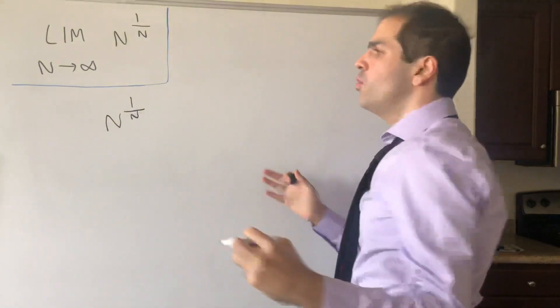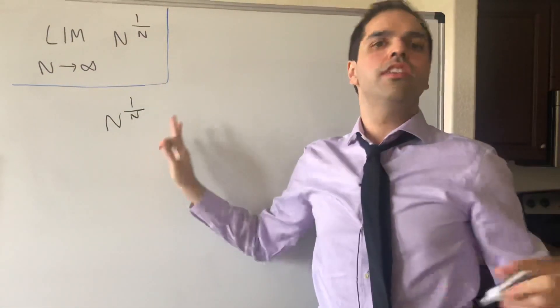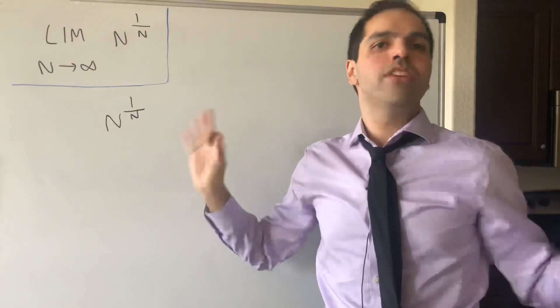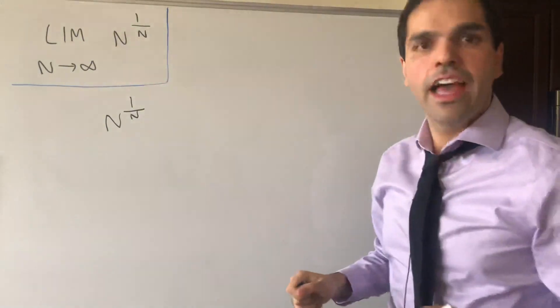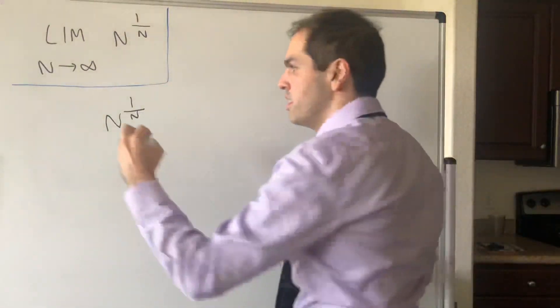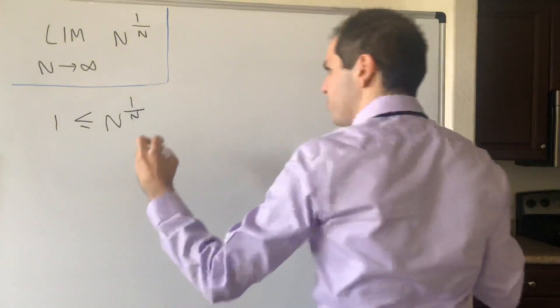On the one hand, if n goes to infinity, n is bigger than 1, so if you take the nth root of this it will always be greater than or equal to 1.